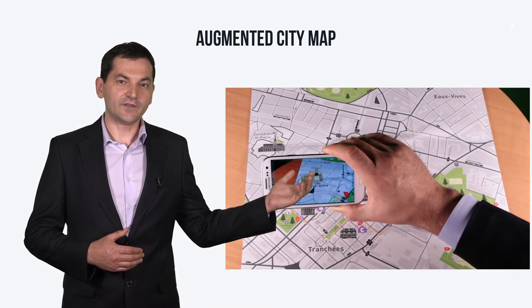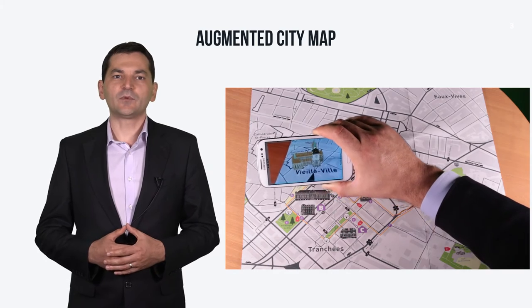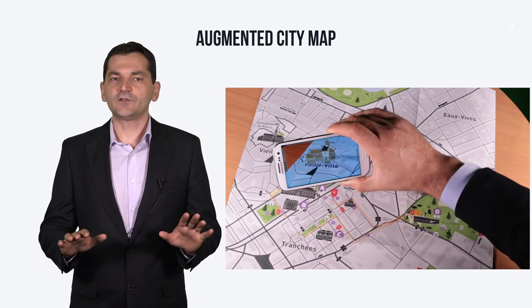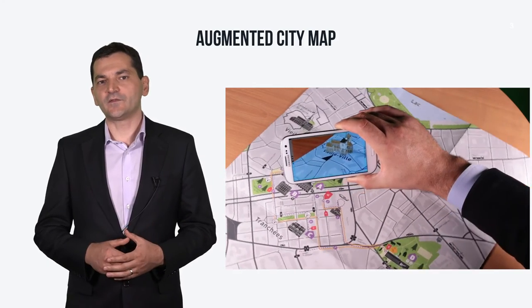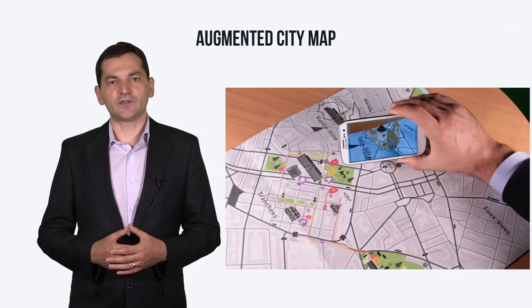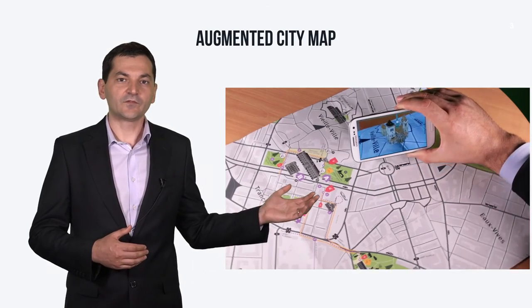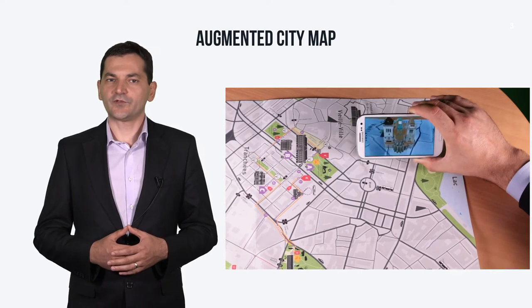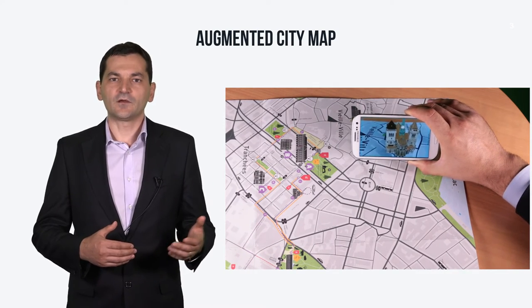At the end of the week you will have an AR application that will augment a city map with a 3D model. As shown in this video, an augmented city map consists in displaying on top of a paper map a set of 3D objects representing various places, monuments, and buildings in the city. In this case we use the map of Geneva and, as for 3D objects, the 3D model of a cathedral.